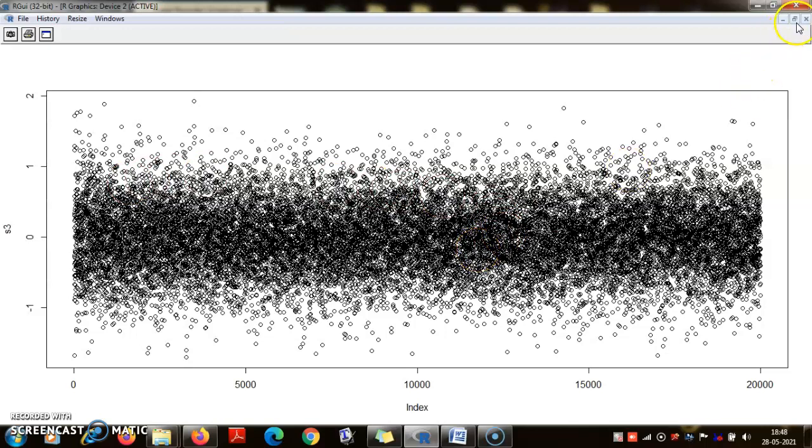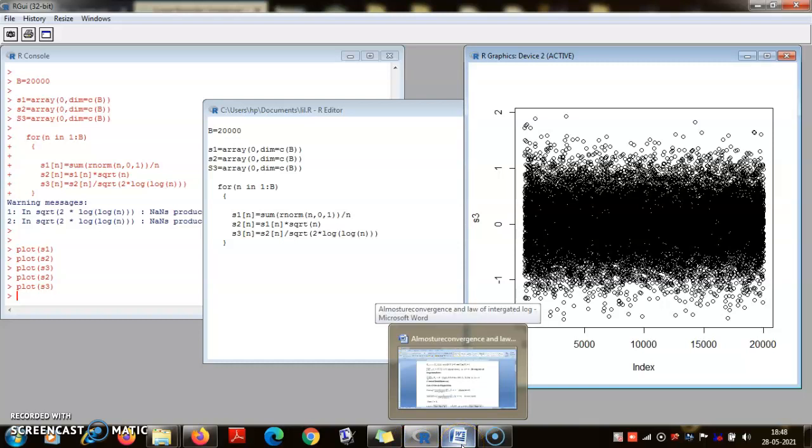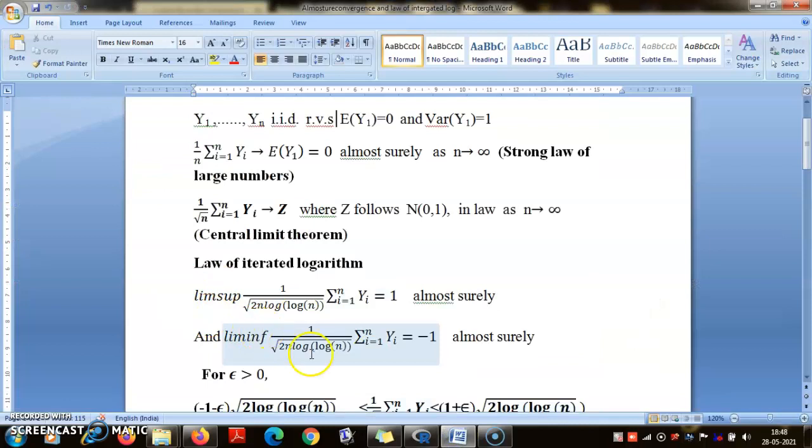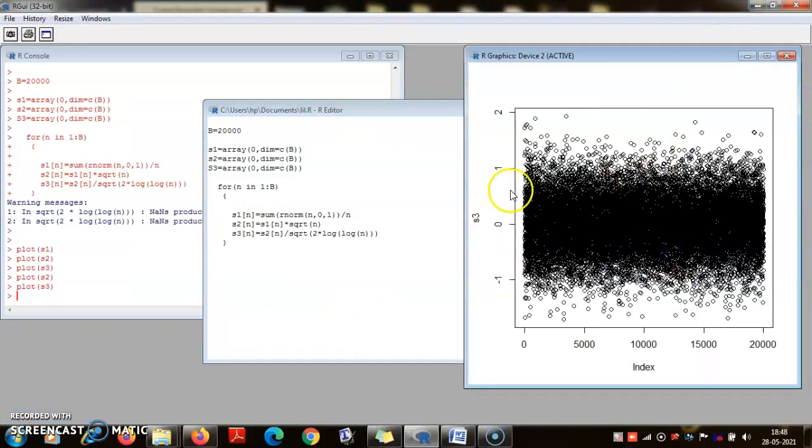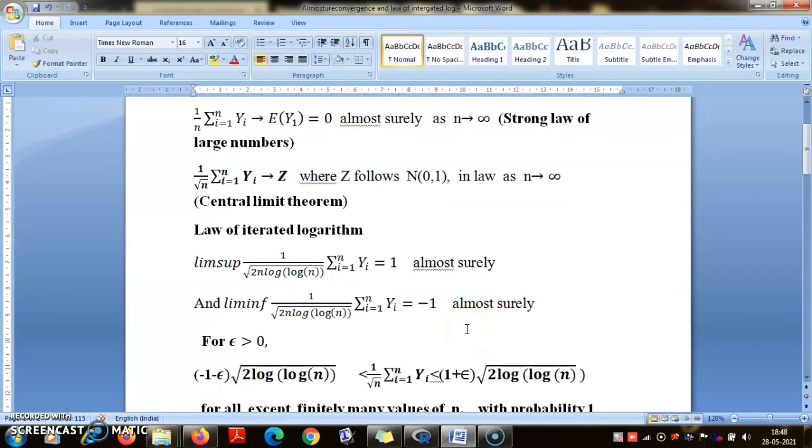You can see if you draw two horizontal lines at 1 and -1, most of the values are contained in this region. This is what the result actually means. We have plotted n against the values, and this is what the plot is. You see most of the values are varying between -1 and +1.